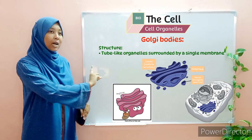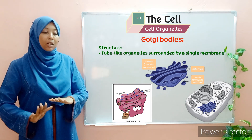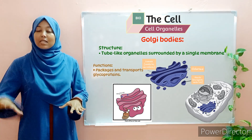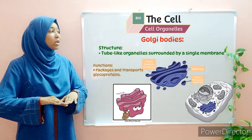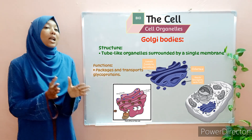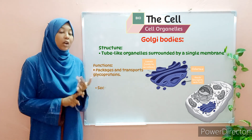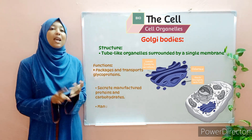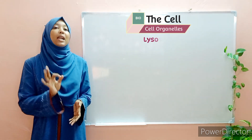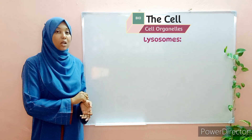Coming back to the endoplasmic reticulum — the rough endoplasmic reticulum transports proteins to the Golgi bodies. Once in the Golgi bodies, they package the proteins for transport to different parts of the cell. Another function of the Golgi bodies is that they secrete manufactured proteins and carbohydrates. Lastly, they also manufacture lysosomes.